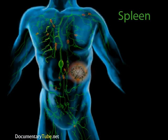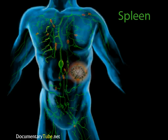The spleen is a significant lymphatic structure. It has a lot in common with the smaller nodes throughout the body. But unlike the lymph nodes, the spleen does not filter lymph. It's part of the lymphatic system because it filters the blood. As the blood passes through the white pulp of the spleen, there is an invader-stimulated response from the diffuse lymphatic tissue or the lymph nodules.